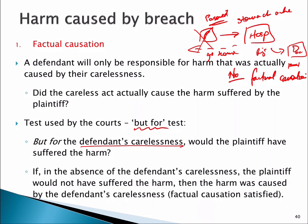So we have to answer the but-for test as 'no' — but for the defendant's carelessness, would the plaintiff have suffered the harm? The carelessness has to be the cause. Stated another way, removing the negative: if in the absence of the carelessness the plaintiff would not have suffered harm, then the harm was caused by the carelessness. As simply as possible — did the act or omission, the carelessness, actually cause the harm? Or would the harm have occurred without that carelessness?